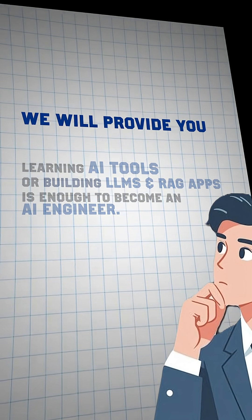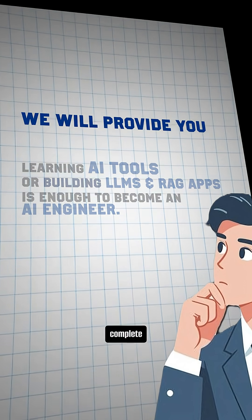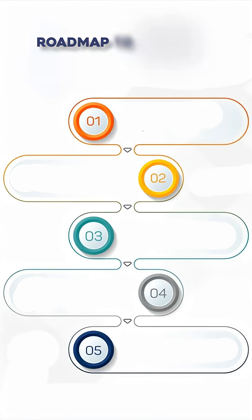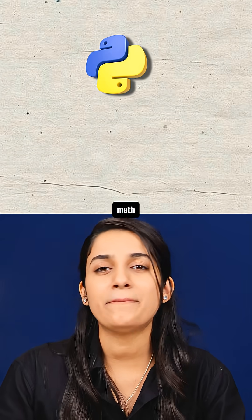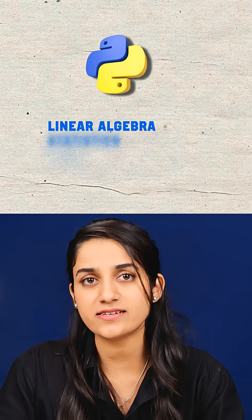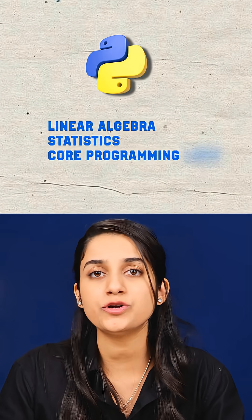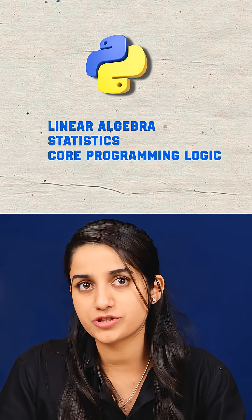So today we will provide you with the complete roadmap to become an AI engineer in 2025. Step 1: start with the fundamentals like Python, math essentials like linear algebra, statistics, and core programming logic.